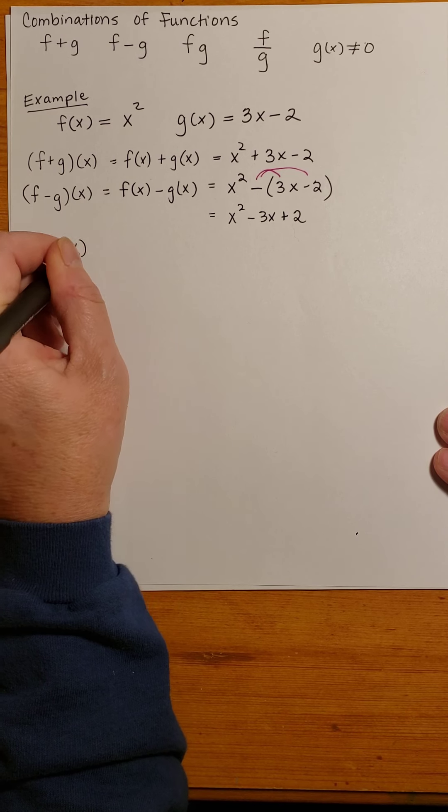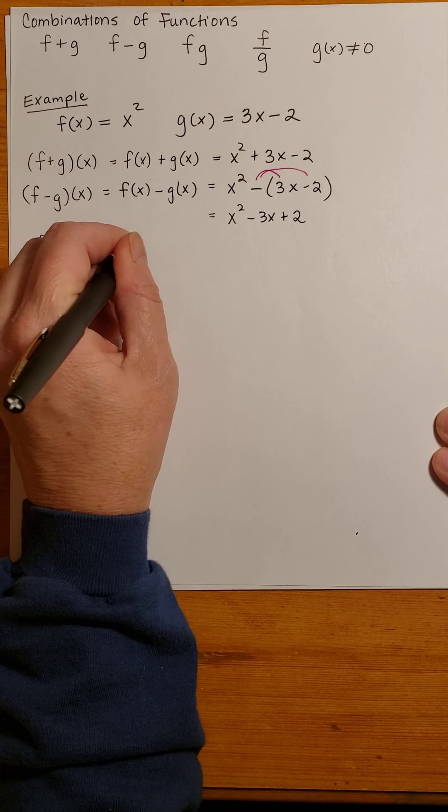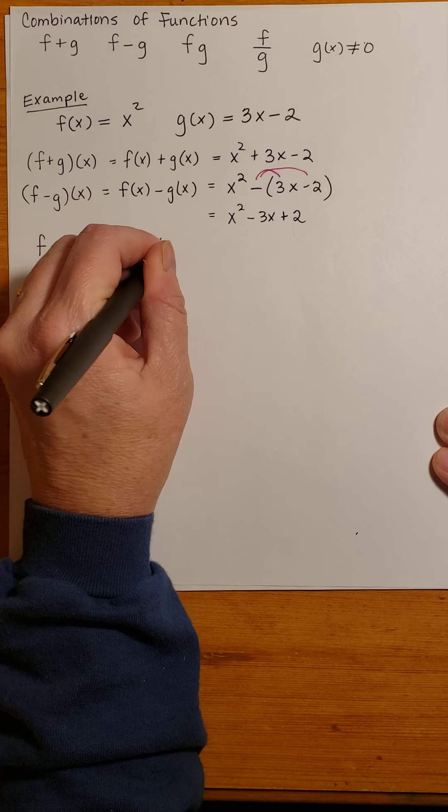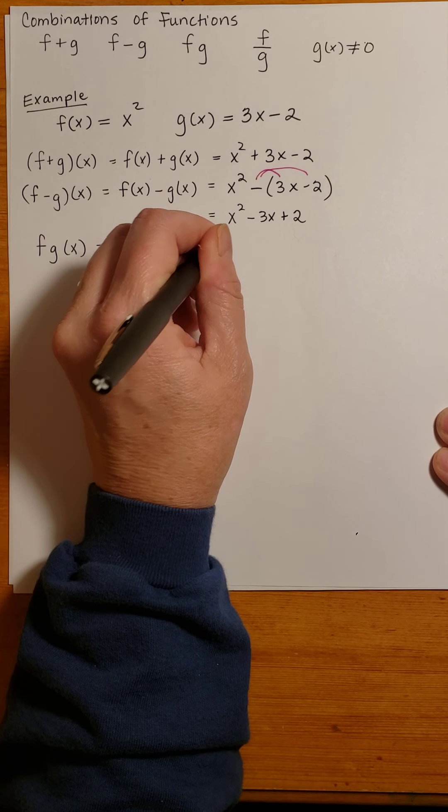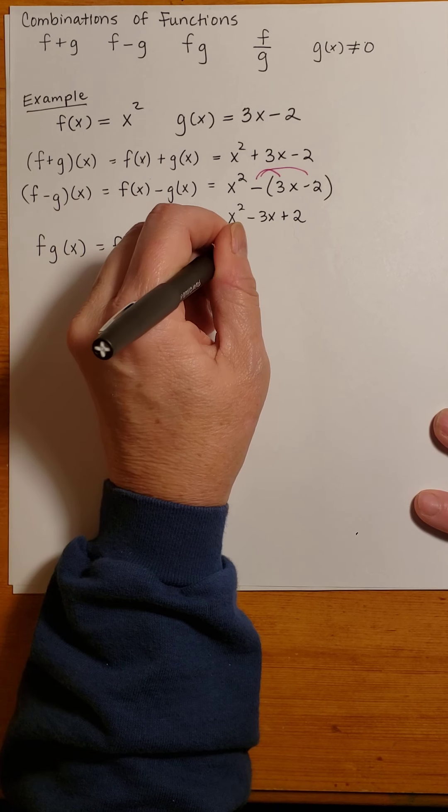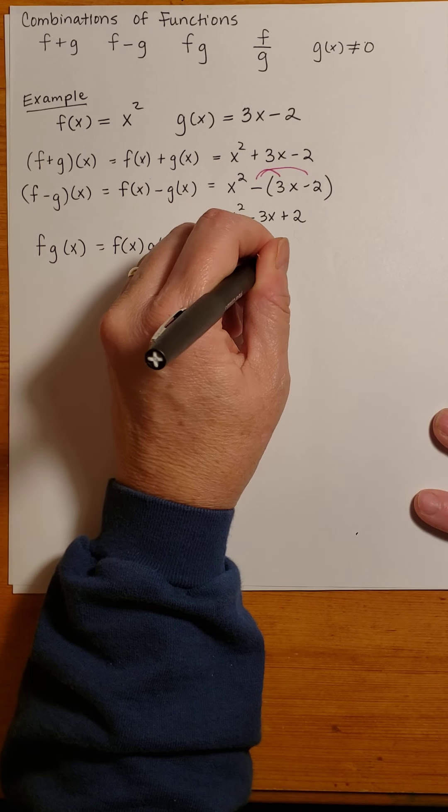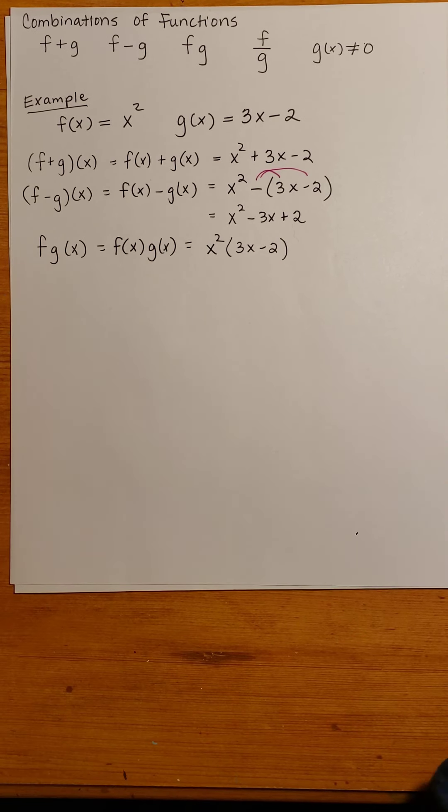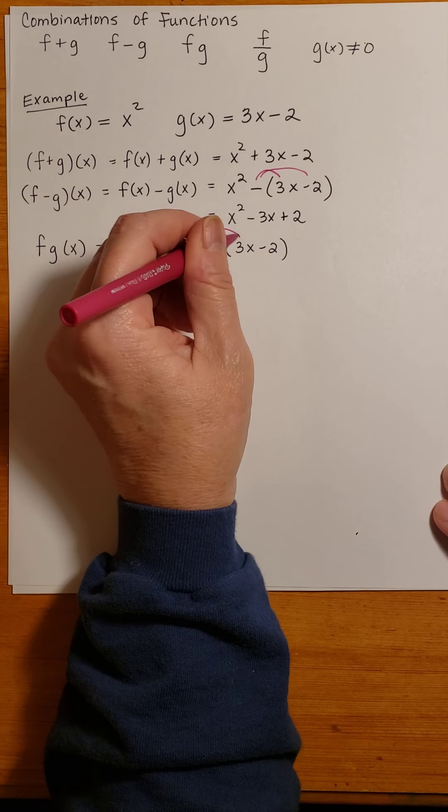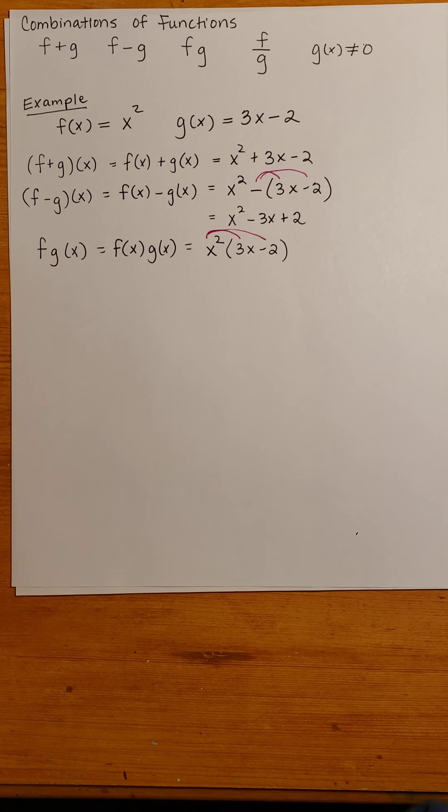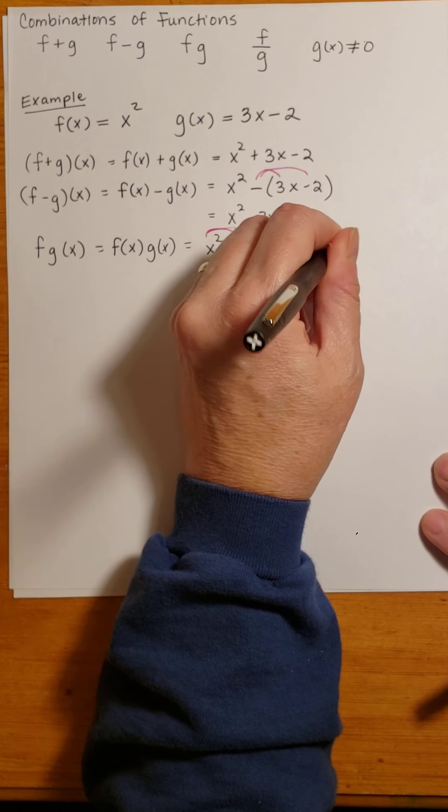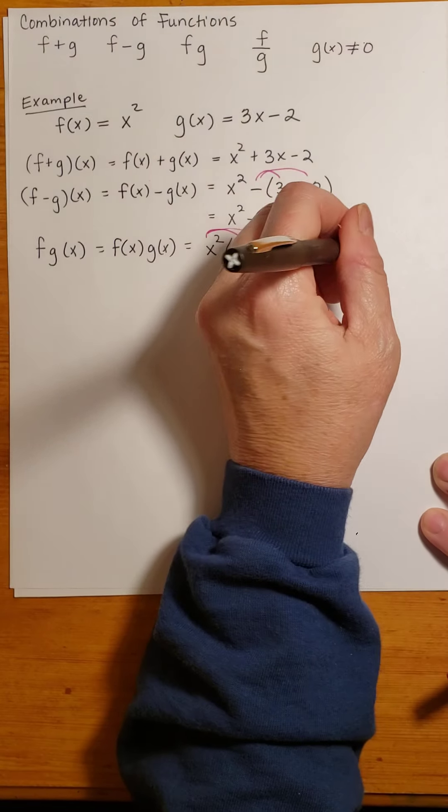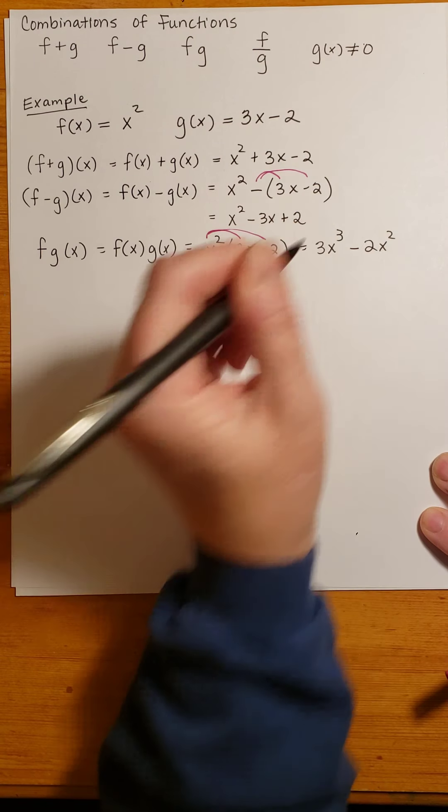fg(x) is defined to be f(x) times g(x). So I'm going to take f(x), which is x², and multiply it by 3x - 2. When I distribute the x², I get x² times 3x, which is 3x³, and minus 2x².